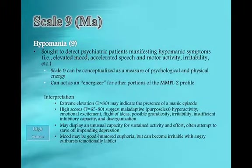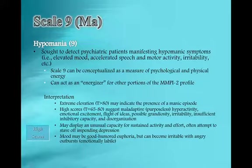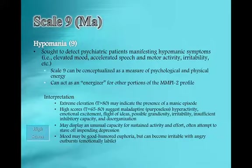Hypomania — or sometimes just the mania scale — is scale nine. We sometimes call this the energy scale. We look at this in relationship to other elevated scales. If somebody has a lot of energy or capacity to act as indicated by scale nine, we get a little more worried when we see other scales significantly elevated alongside it. Whereas if other scales are elevated but scale nine is fairly flat, we know that things driving maybe paranoid thinking won't get acted out on, because the client doesn't have that high drive.